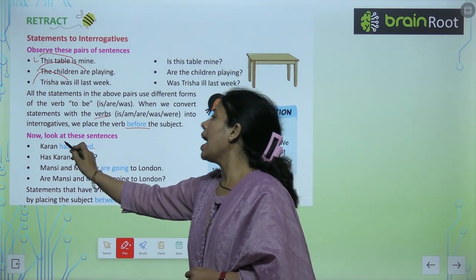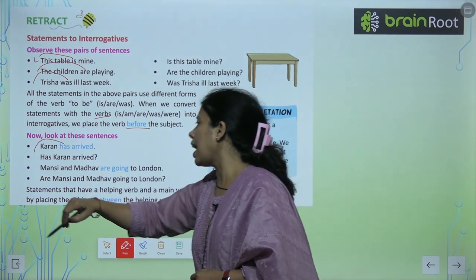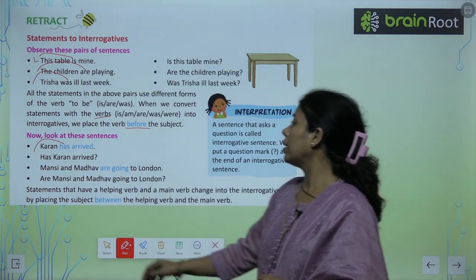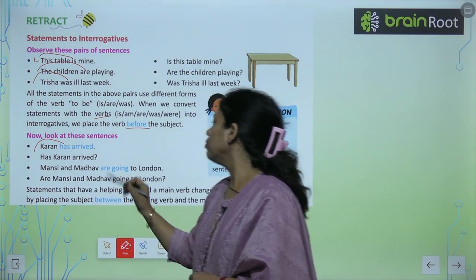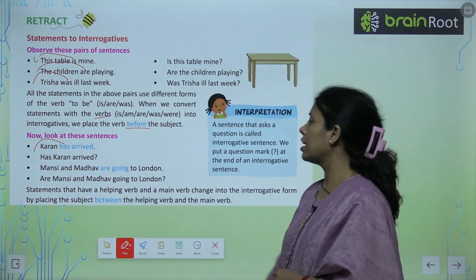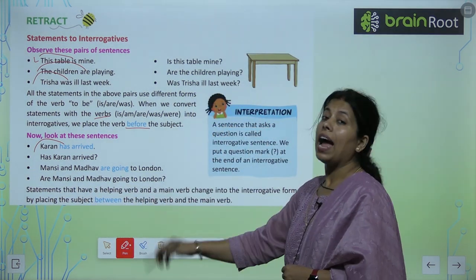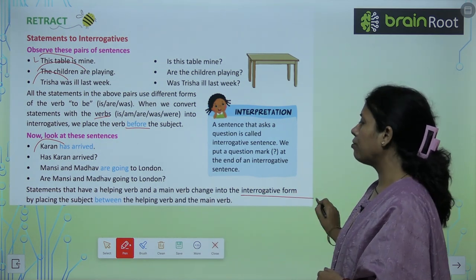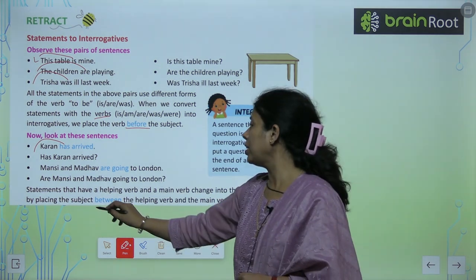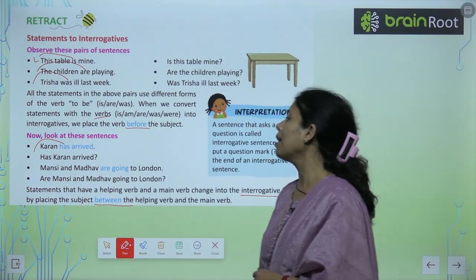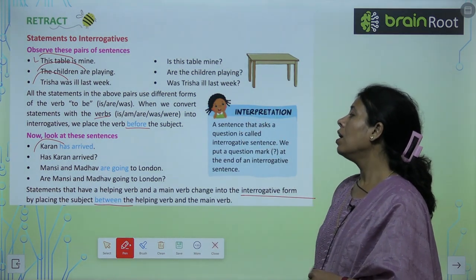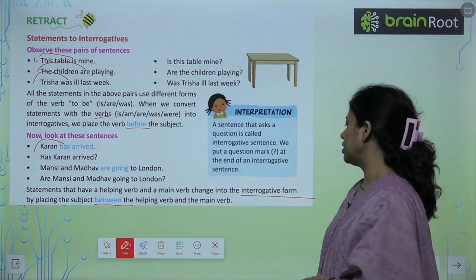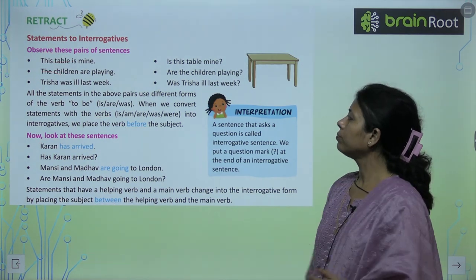'Current has arrived' → 'Has current arrived?' 'Mansi and Madhav are going to London' → 'Are Mansi and Madhav going to London?' Statements that have a helping verb and a main verb change into interrogative form by placing the subject between them — subject को बीच में ले आइए। चलिए आते हैं अपनी exercise पर।